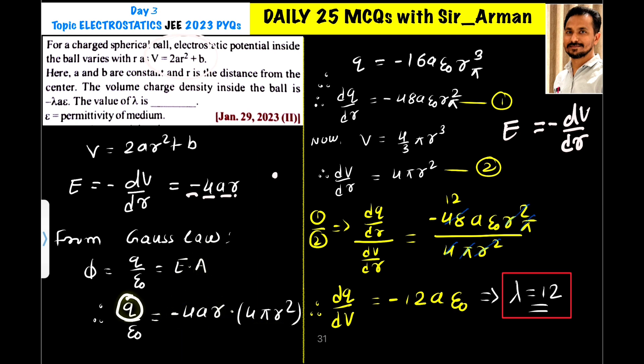So if you make Q as a subject, then Q equals, here ε₀ will go here, 4 into 4 is 16, so minus 16Aε₀R³ into π.